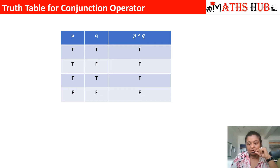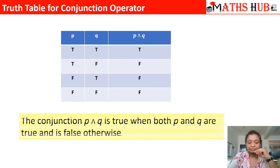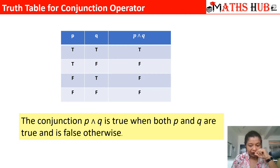What is the output of p and q? When both statements are true, the result is always true. If one is true and the other is false, the result is always false. When both are false, the result is also false. So conjunction p and q is true only when both p and q are true, and false otherwise.